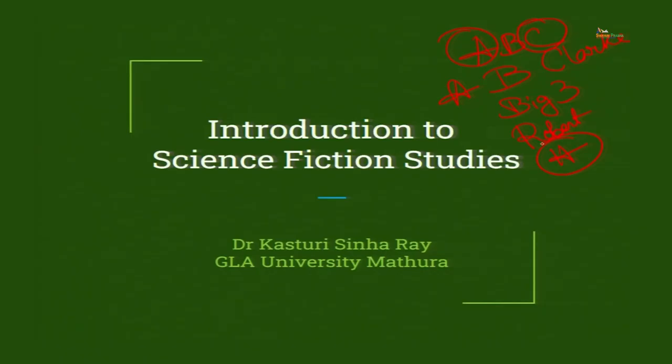Before that, let us take a small recap of the previous authors. We have discussed the ABC of science fiction, that is Asimov, Bradbury and Clarke. We have discussed the big three where Asimov and Clarke are common and along with them Robert Heinlein.